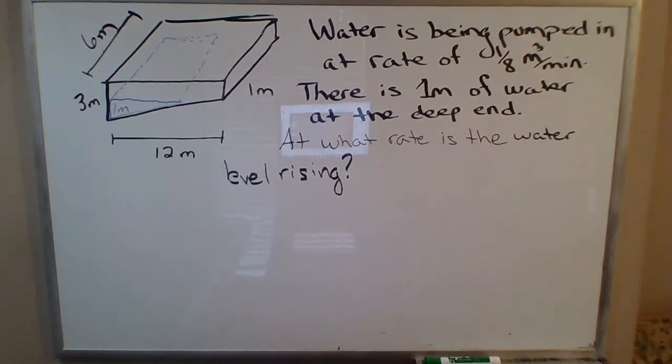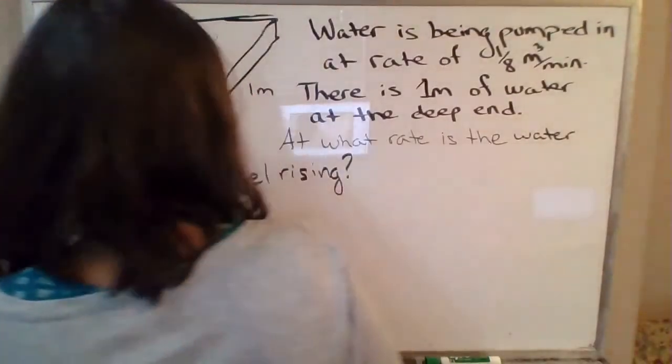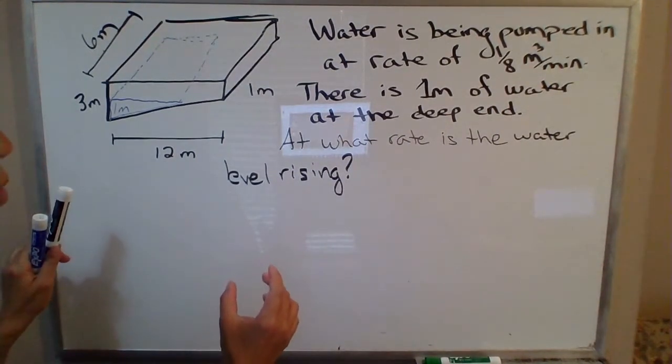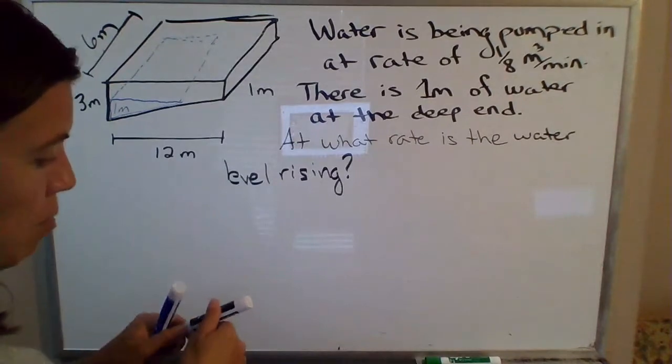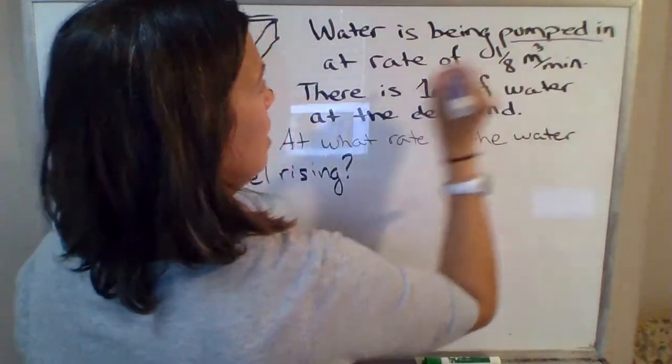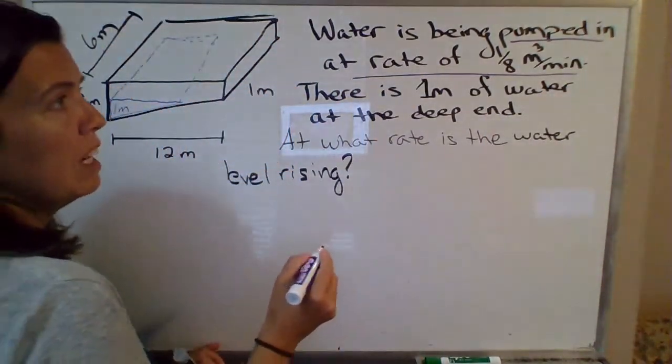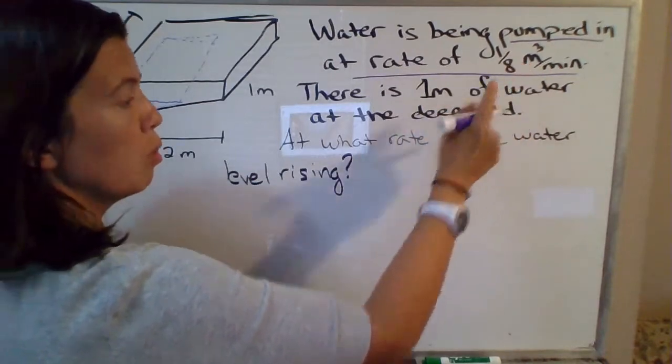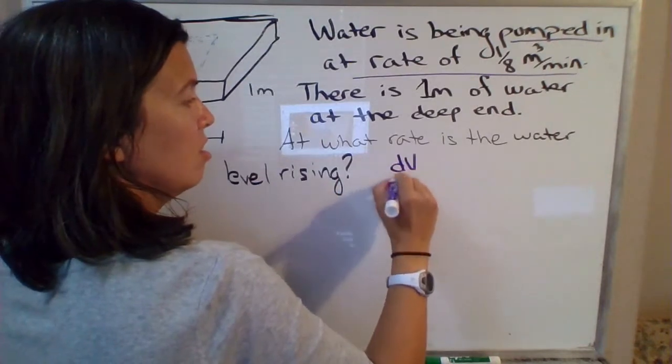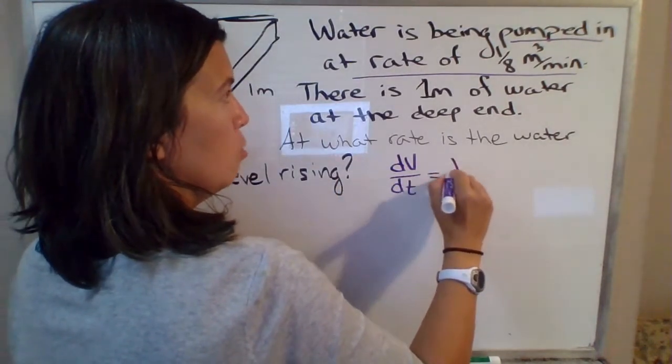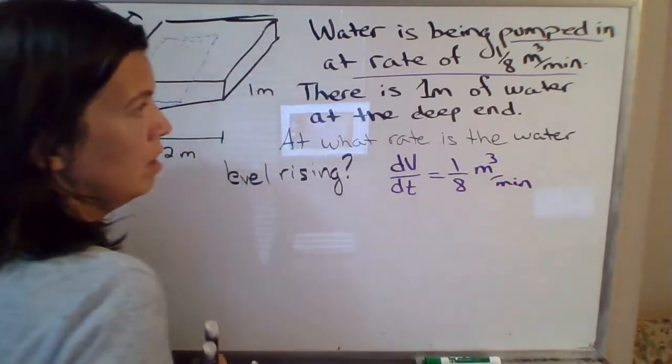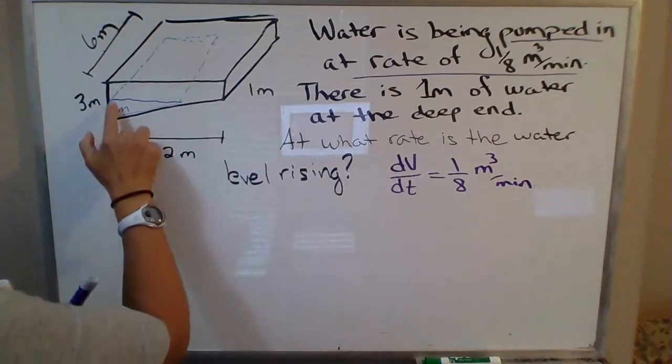Okay, so we are going to need a formula for the volume of water in the pool because the bit of information we're given here, water being pumped in at a rate of one-eighth of a cubic meter per minute, that's your change in volume. So the problem is telling us that dV/dt, the change in volume over time, is one-eighth of a cubic meter per minute.